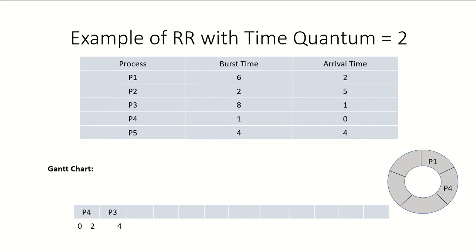P3 starts running from time two to time four. P4 still has one time unit remaining. P3 finishes at time four, and at time four P5 has also arrived in the system. P5 joins the ready queue, and after completion P3 also rejoins. P3's remaining time is now six time units.